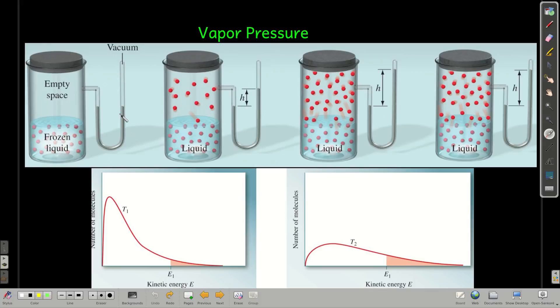Now, vapor pressure. To talk about this, let's imagine we have a container with a frozen liquid in it, like ice, and empty space here. There's a vacuum, there's no gas here at all. And then we let this liquid melt. As it melts, some of the molecules will escape from the liquid and go into the gas phase.